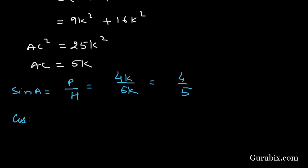We have cos A, that is base over hypotenuse. Base is 3K, hypotenuse is 5K. So this will be 3/5.